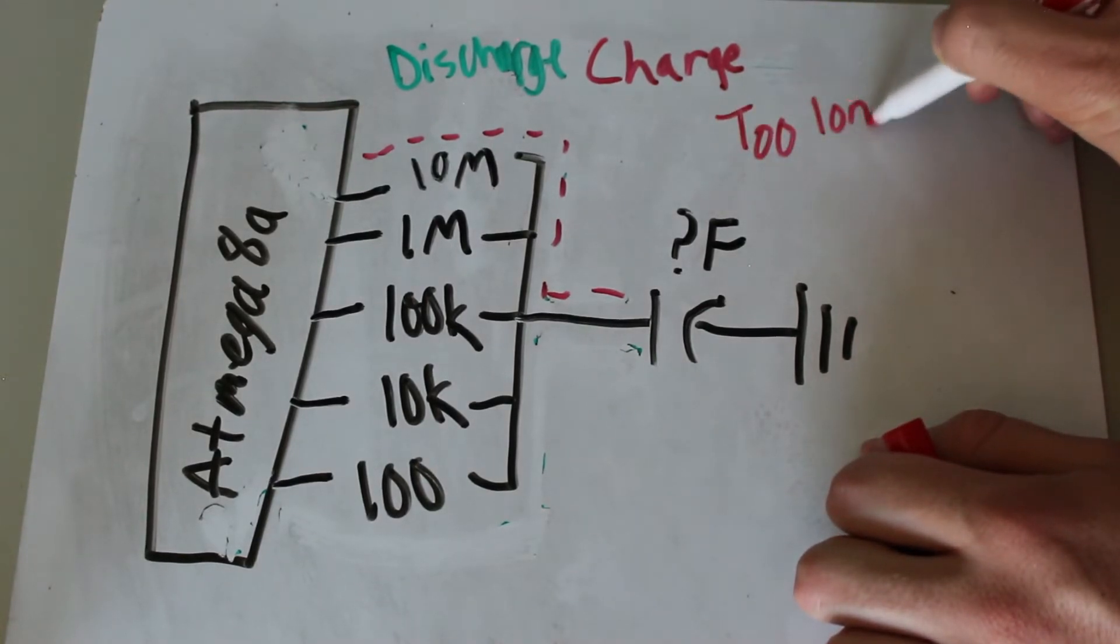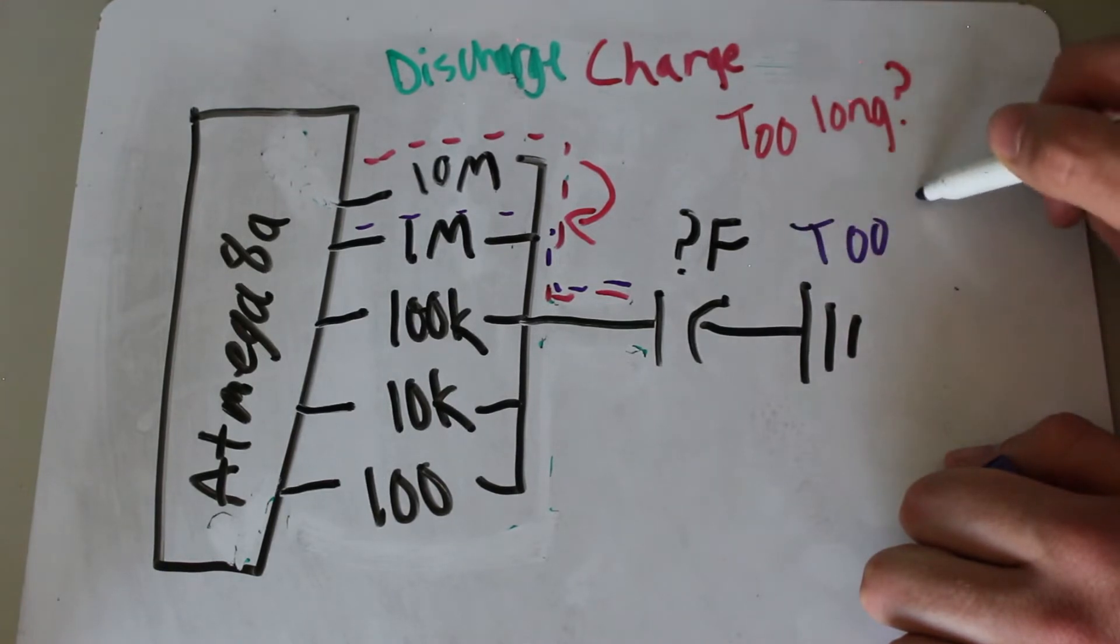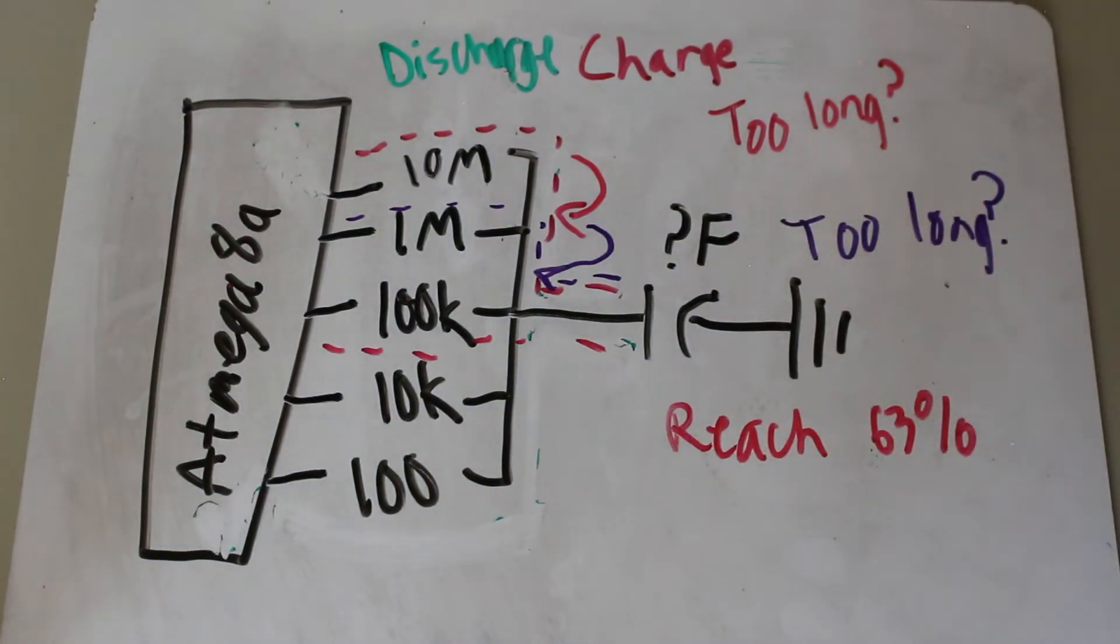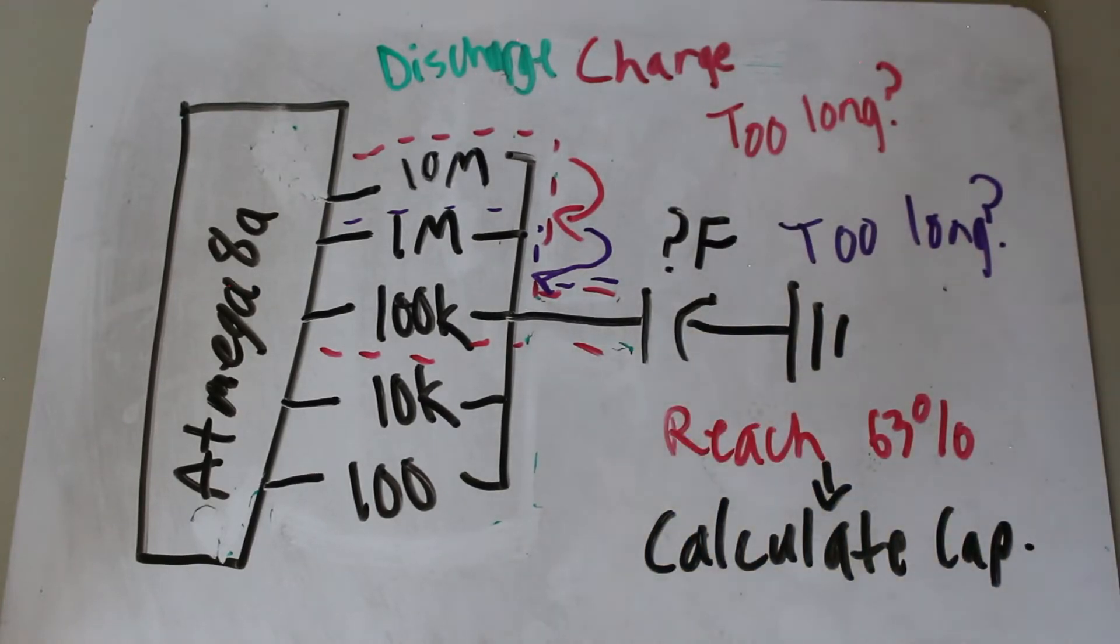Discharge and repeat until we reach the resistor that either reaches the full 63.2% of the input voltage or the last resistor. Then, we measure how long it took to reach the correct voltage level and divide that by the current resistor to get our capacitance.